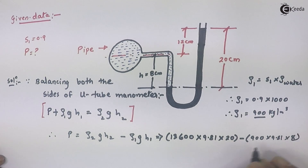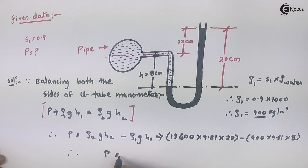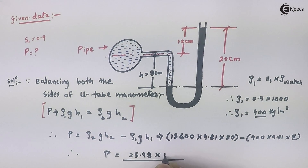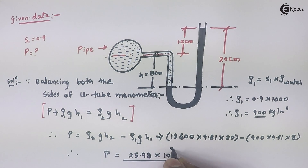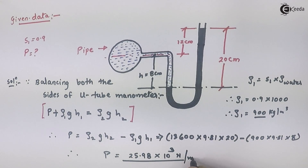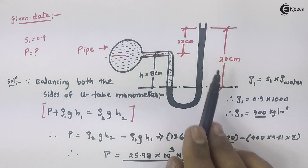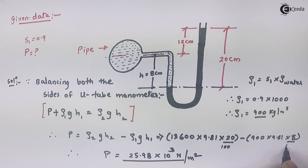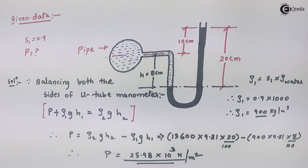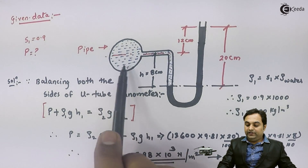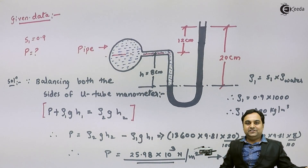So we substitute: ρ₁ = 900 kg/m³, g = 9.81, and H₁ = 8 centimeters. Since the heights were in centimeters, we convert to meters by dividing by 100. Calculating this gives a final answer of 25.98 × 10³ Newton per meter square. This is the pressure of the fluid inside the pipeline, and with this we complete the problem.